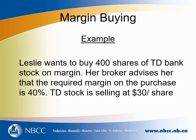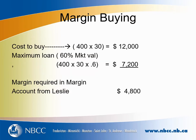So we'll start with an example. In this example, Leslie wants to buy 400 shares of TD Bank stock on margin. Her broker advises her that the required margin on the purchase is 40% and TD stock is selling at $30 per share. So the first thing we're looking at is that Leslie is buying 400 shares of the stock at $30 a share.